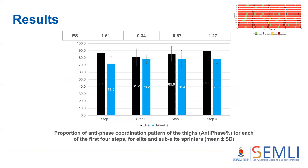Looking at the overall proportion of each step spent in an antiphase pattern — the proportion of bright red coordination bins — the antiphase percentage was higher in the elite group than the sub-elite group for all steps, with an effect size of up to 1.6 for step one.